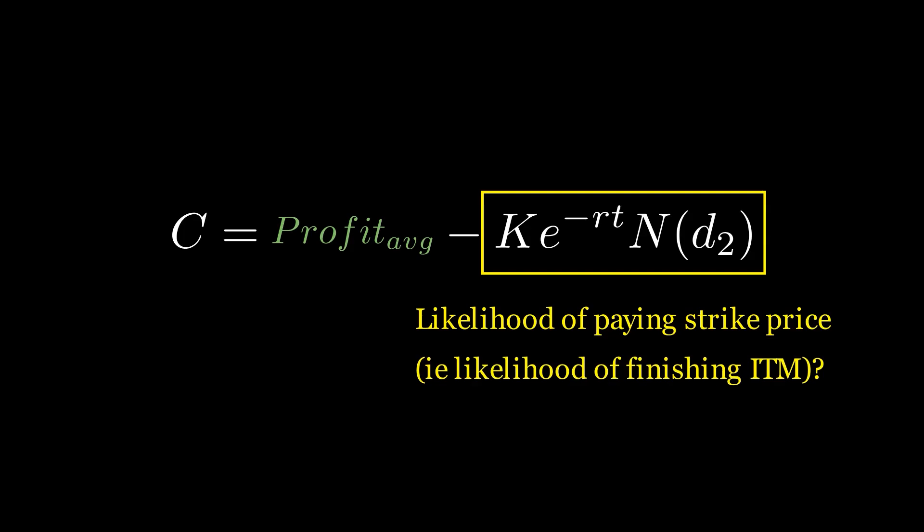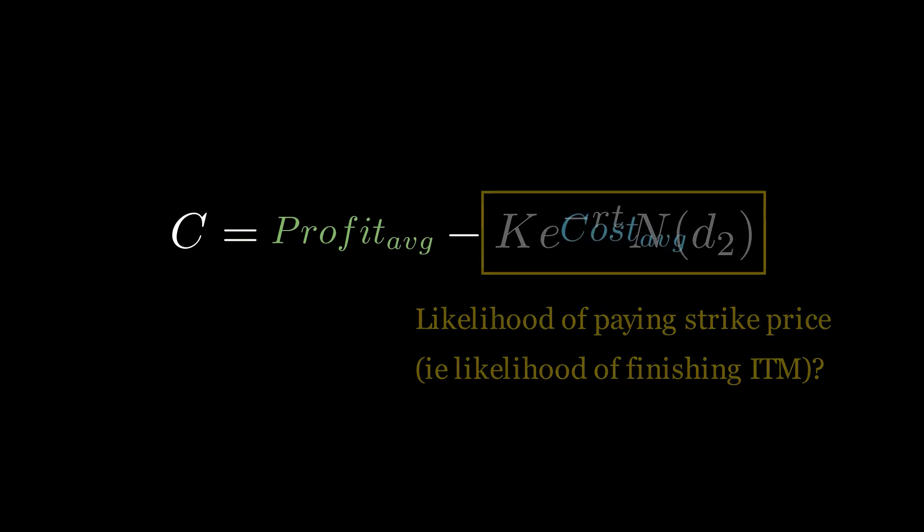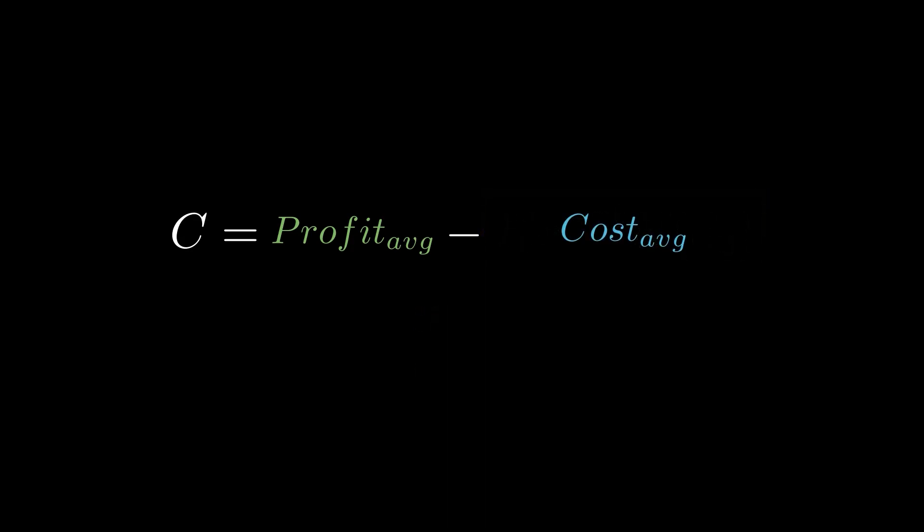The term e to the power of negative RT times N(D2) answers: what's the likelihood that the option holder will end up paying the exercise price at expiration? Multiplying this by strike X, we can calculate how much it will cost, on average, to own this option. Put together, these terms represent the current expected value of the option — by subtracting the average we will pay from the average we will earn, we can get its fair value.